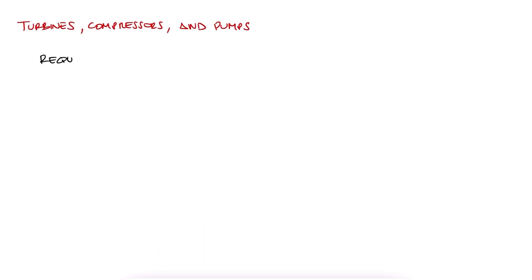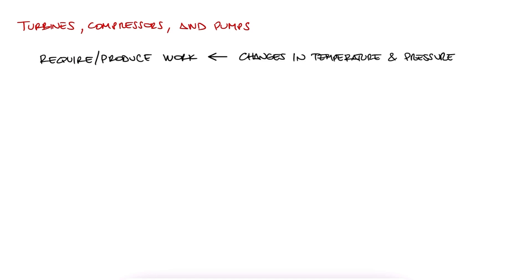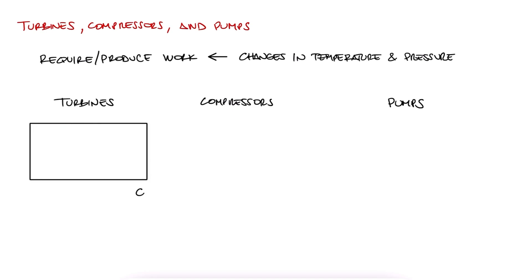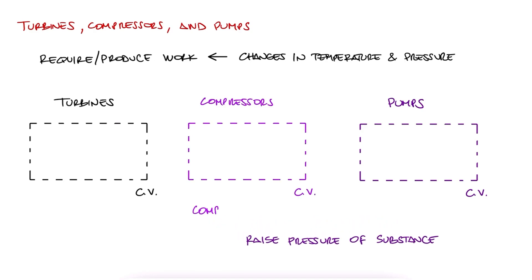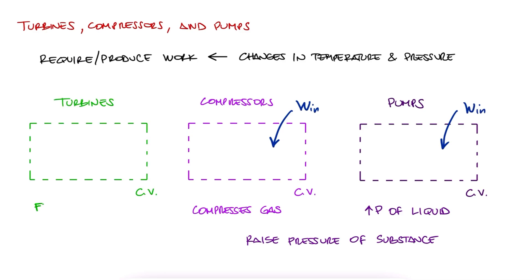Devices that either require work or produce work as a result of the change in temperature and pressure include turbines and compressors or pumps. Compressors and pumps both raise the pressure of the substance. The main difference between them is that the compressor compresses a gas and the pump increases the pressure of a liquid. Both compressors and pumps require work to operate to achieve that change in pressure. Turbines, on the other hand, take those changes in temperature and pressure to produce work.